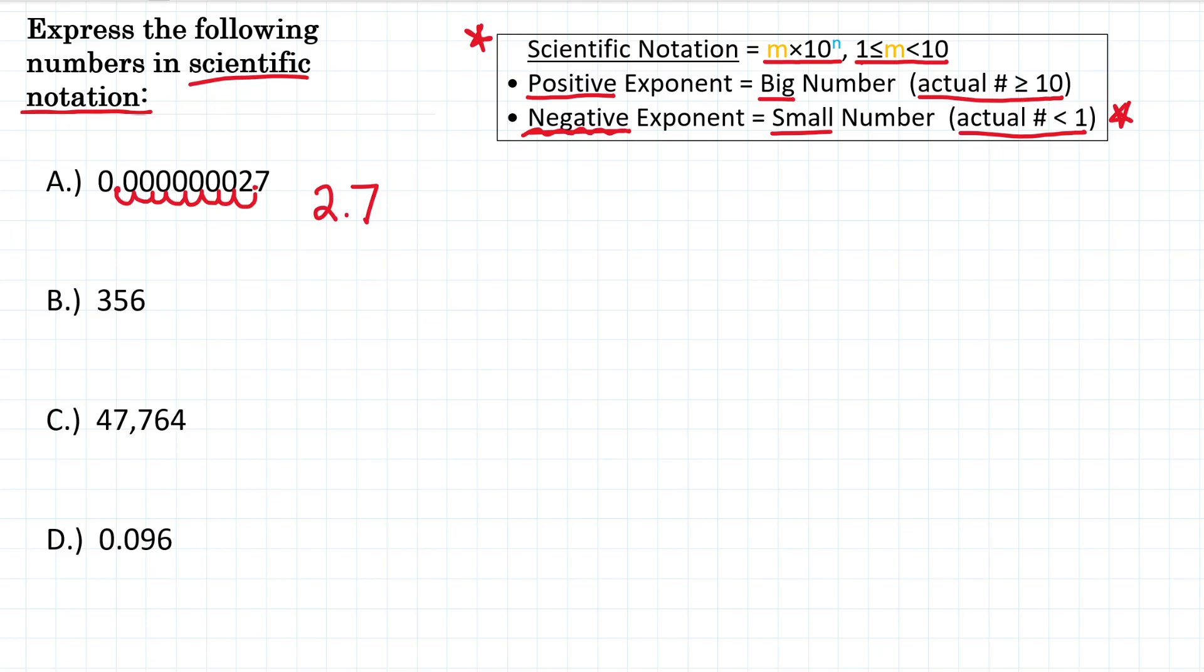And then we add times 10, and we moved the decimal 8 places. So it's to the 8th power. And 0.00000027 is a very small number, so our exponent needs to be negative. So 0.00000027 is the same thing as 2.7 times 10 to the negative 8th. Those are the same numbers. One's in scientific notation, one is in standard notation or decimal form.